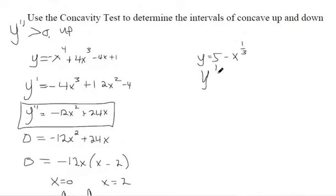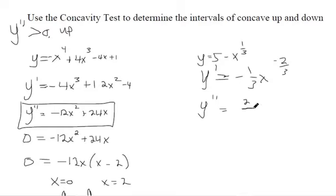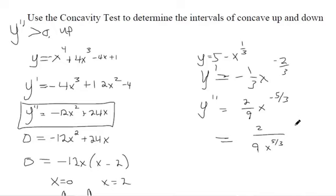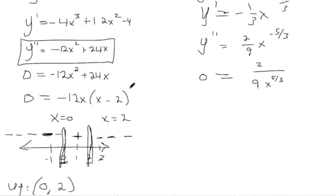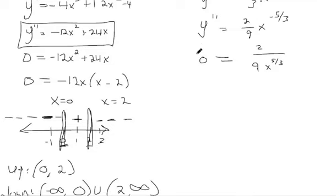Now the same thing with this next problem. Take the first derivative: that's negative one-third x to the negative two-thirds. We'll keep it in that form because we want a second derivative. Using the power rule, negative two-thirds comes down and multiplies, giving us 2 ninths times x to the negative five-thirds, or equivalently 2 over 9x to the five-thirds power.